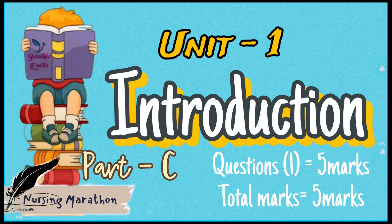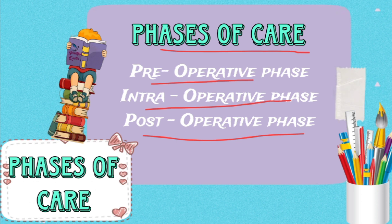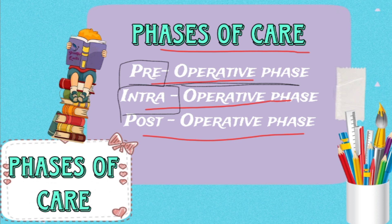Welcome back to the channel. This is Unit 1 Part C. For the patient who is going to undergo an operation, there are three phases of care: preoperative phase, intraoperative phase, and postoperative phase. Pre indicates before the operation, intra indicates during the ongoing operation in the OT theater, and post indicates after the operation when the patient is taken to the observation room.